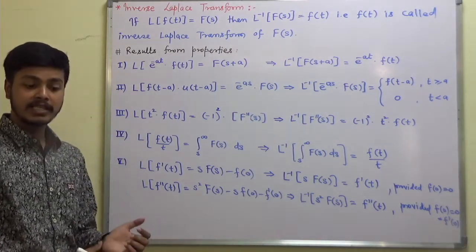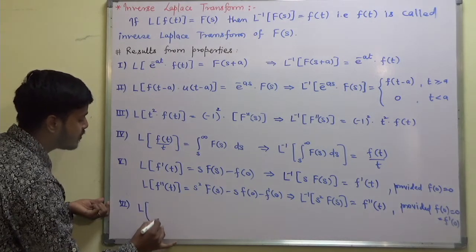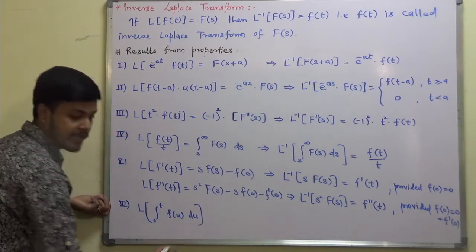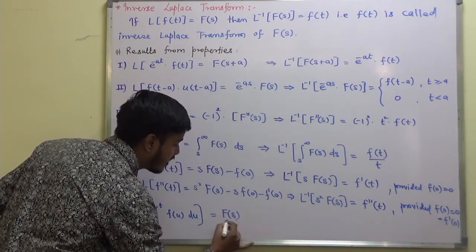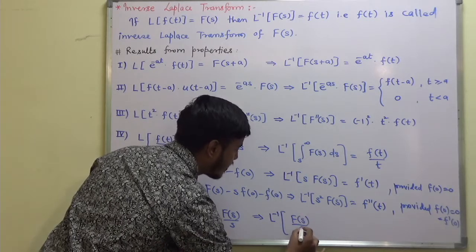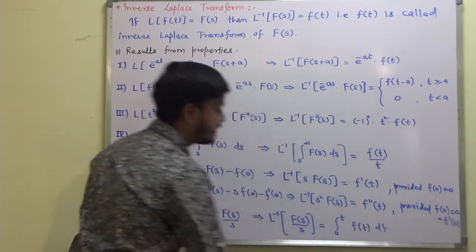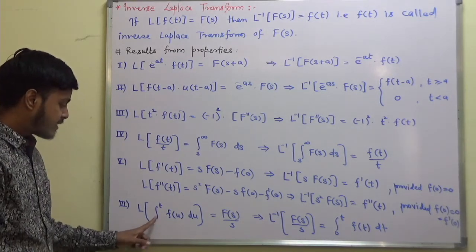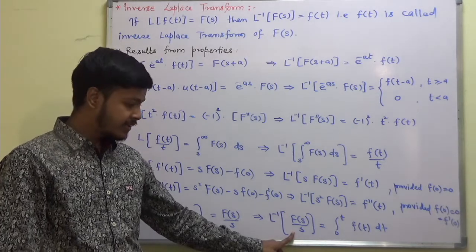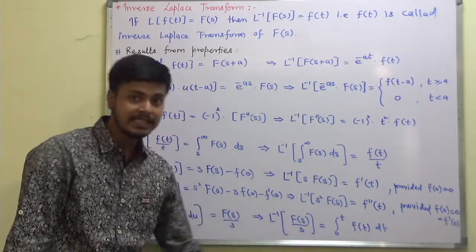Finally, the Laplace transform of the integral: the Laplace transform of ∫₀ᵗ f(u) du is F(s)/s. So L inverse of F(s)/s is ∫₀ᵗ f(t) dt. If it is F(s)/s², there would be two integrations; if F(s)/s³, three integrations, and so on.